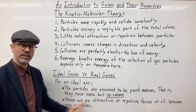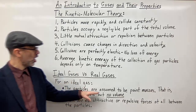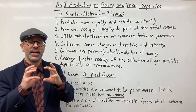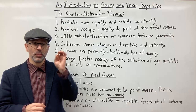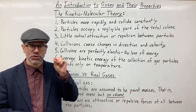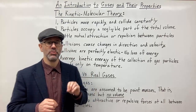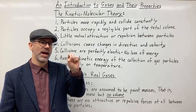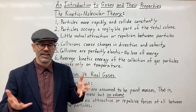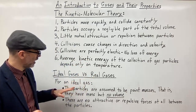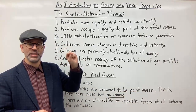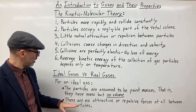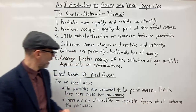For an ideal gas, the particles are assumed to be point masses. A point mass is something that has mass but no volume — it's a geometrical point with no volume. So when we talk about a point mass, we're talking about a particle that has mass but no volume. That's just an assumption we have for an ideal gas. The other thing is that there are no attractive or repulsive forces at all between the particles.